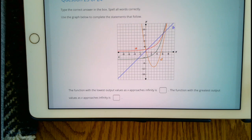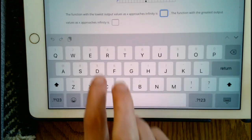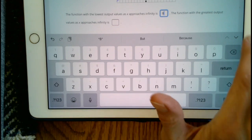It says the function with the lowest output values as X approaches infinity, it's going to be a line. So our graph of our line is B.